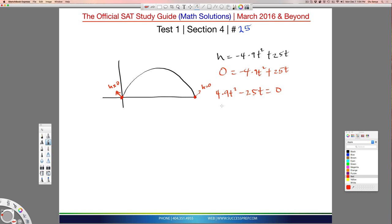So at this point, I want to continue my solution. I'm going to factor out the T's. So I'm going to pull T out, and I have 4.9 T minus 25 without the T because I pulled it out, equal to zero.